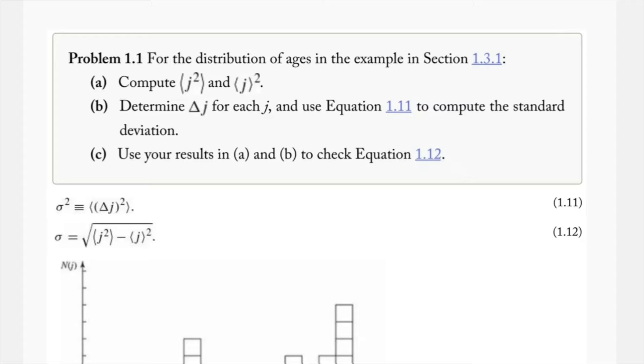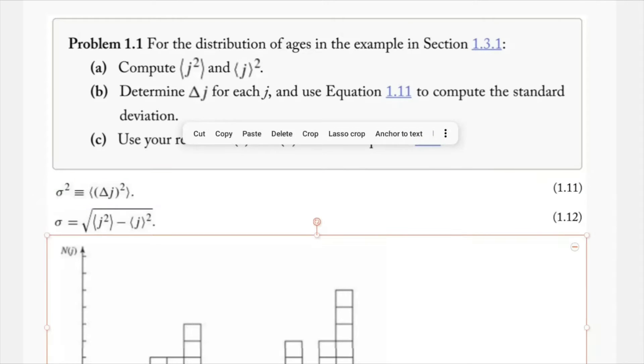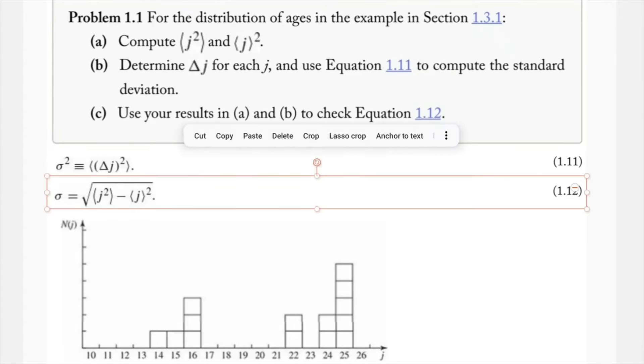Part A: compute expectation value of j squared, as well as the quantity of expectation value j squared. Part B: determine delta j for each j value, and use equation 1.11 to compute the standard deviation. I have 1.11 saved right here for us. And then part C: use your results in A and B to check equation 1.12, which I have right here.